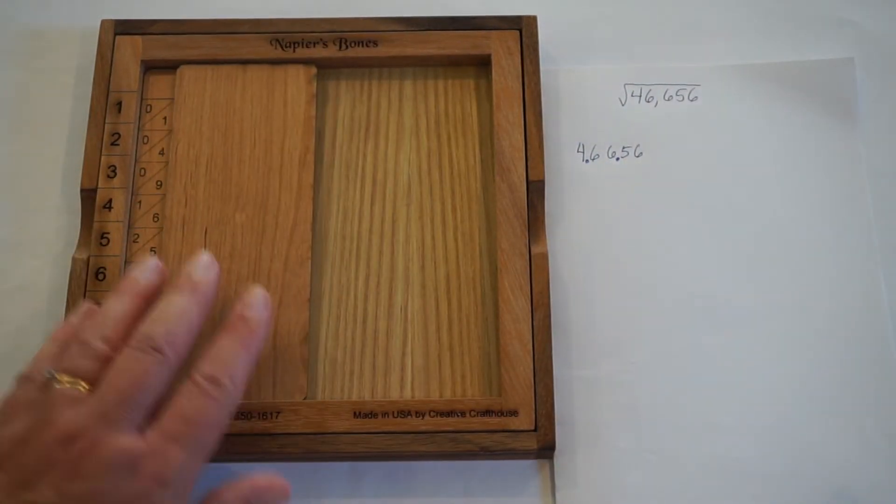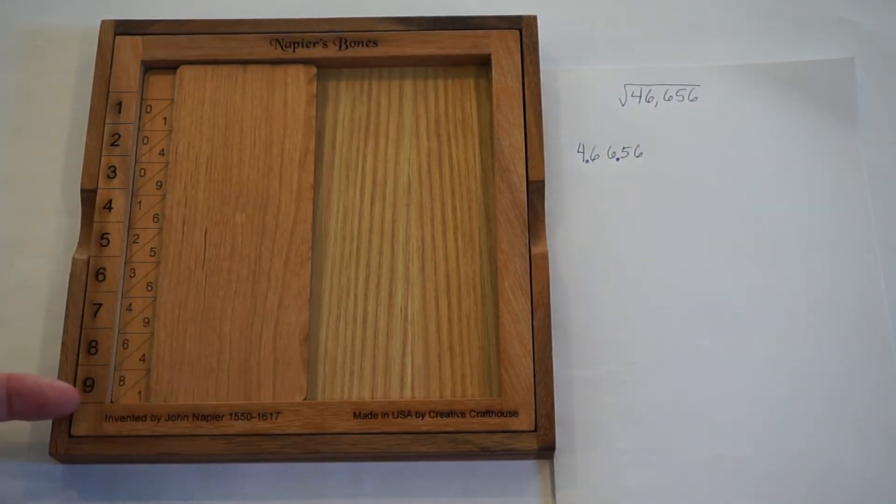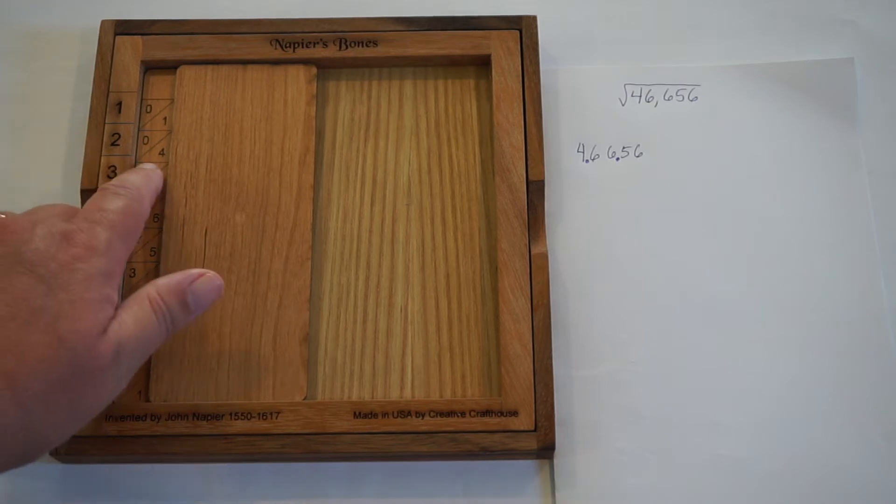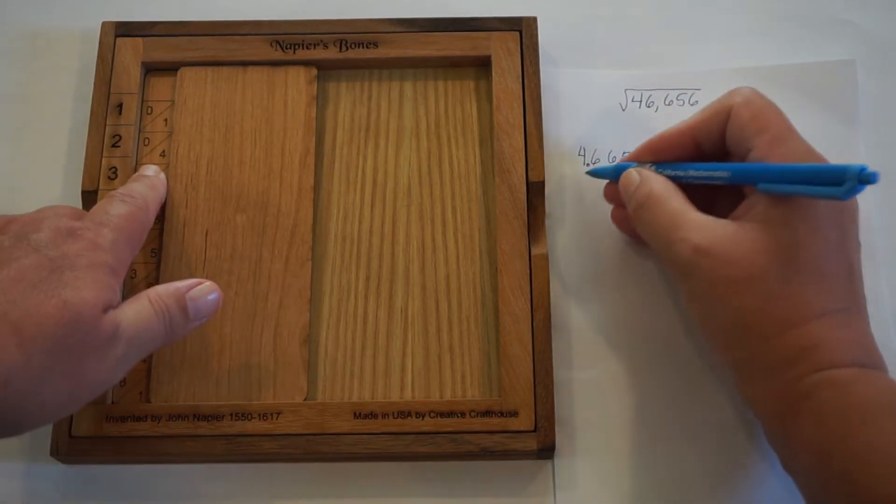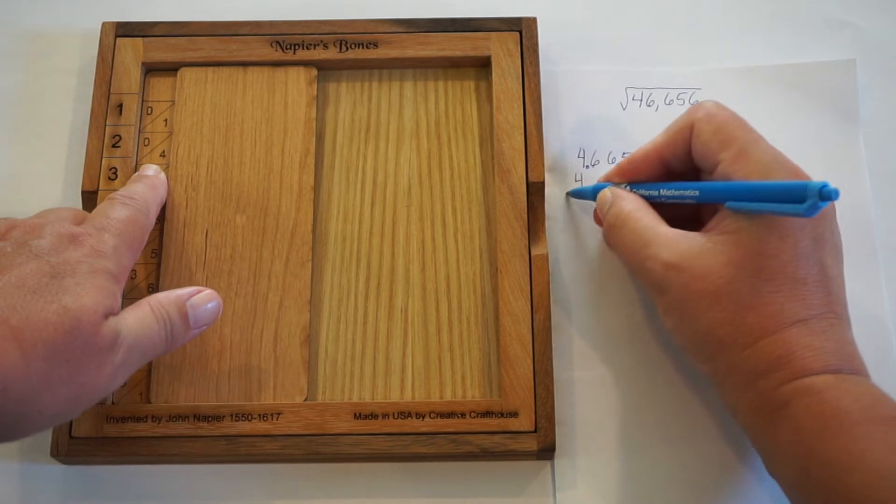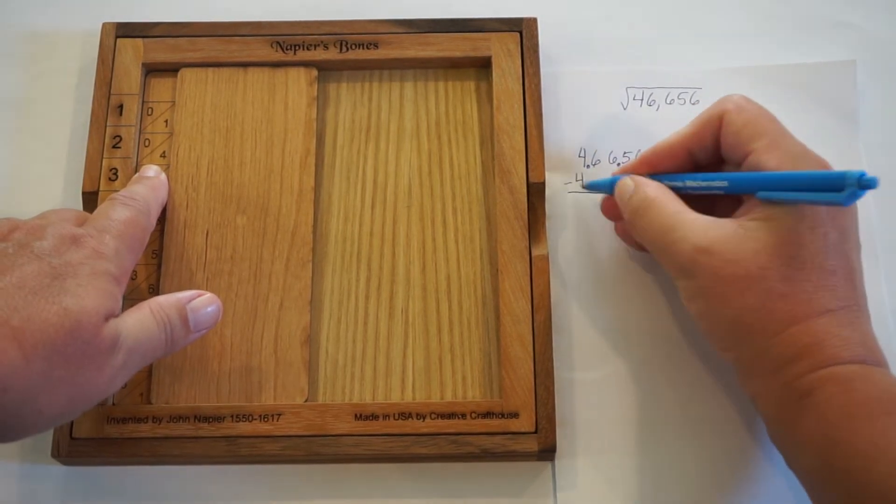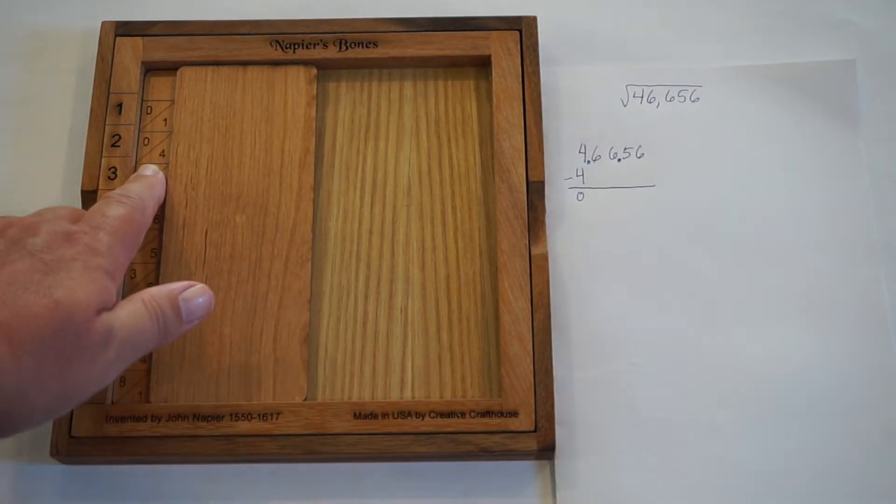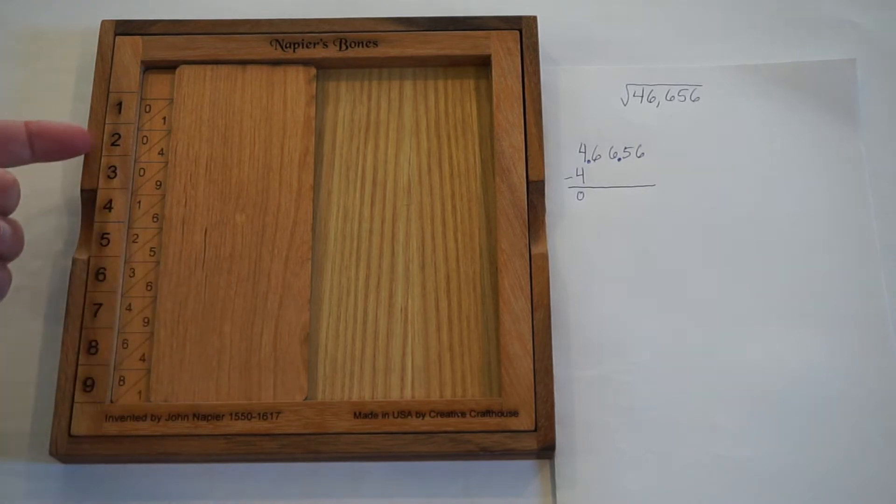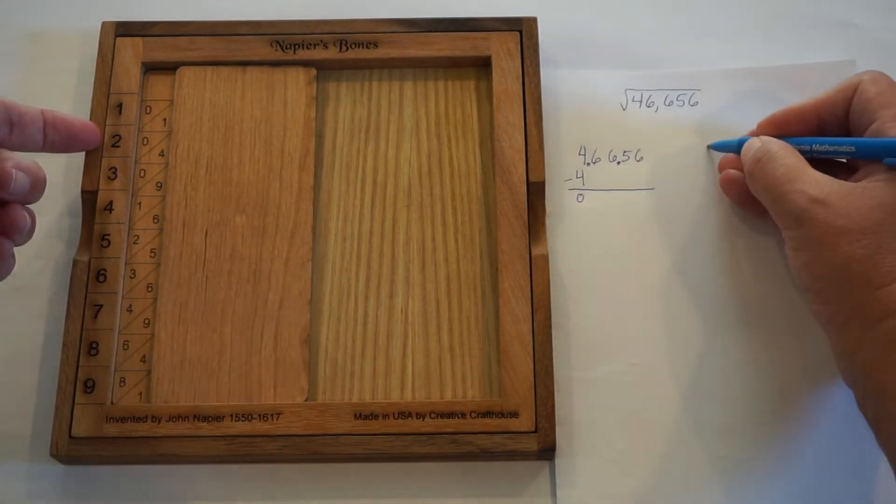Again, we look at the right column of the square root rod. And we find the perfect square which is closest to 4 without going over. And we see that 2 squared is actually 4. That goes in evenly. So the first part of our answer is a 2.